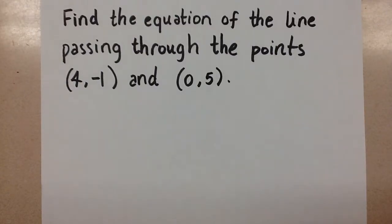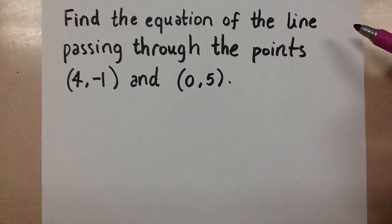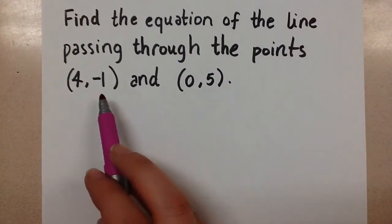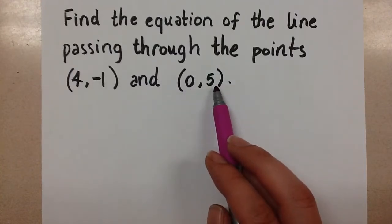Hi guys, Mrs. A here. We are going to find the equation of a line given two points on that line. So in this question we have, find the equation of the line passing through the points 4, negative 1 and 0, 5.